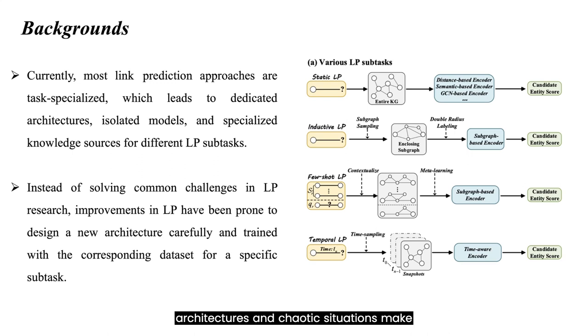The isolated architectures and chaotic situations make it significant to construct a unified model that can handle multiple link prediction subtasks simultaneously without relying on sub-models or changing the model architecture.